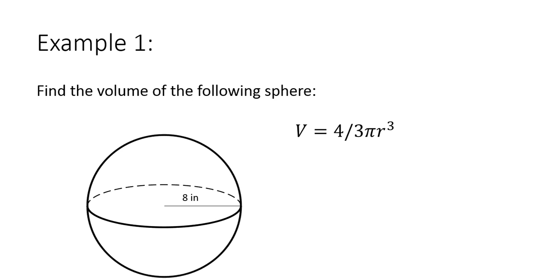So volume equals 4/3 π r³. Substituting in our radius for r. Remember you want to use the pi button instead of using 3.14. Substituting that all into the calculator all at once, I get the volume to be 2,144.7 inches cubed. Remember our units for volume are cubic units.